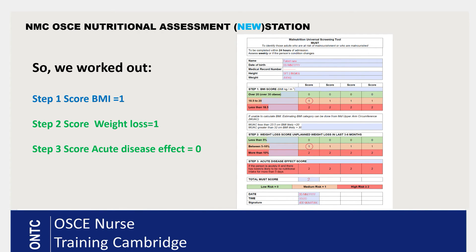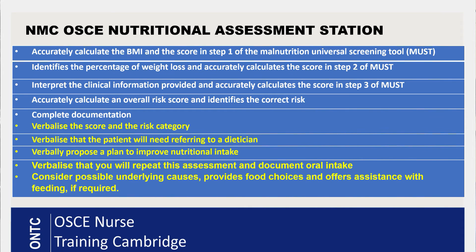We have worked out all the steps of the MUST tool and completed the total score. Half of this station is verbalization. After completing the documentation, verbalize the score to your examiner — say 'my patient's score is two, which is high risk of developing malnutrition,' or whatever your score is.